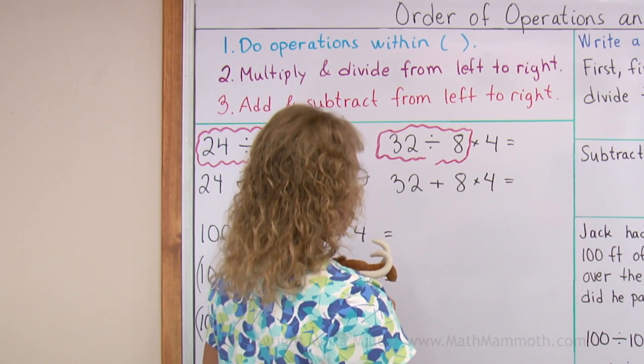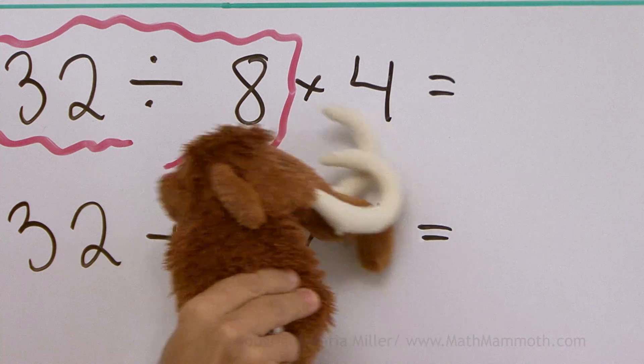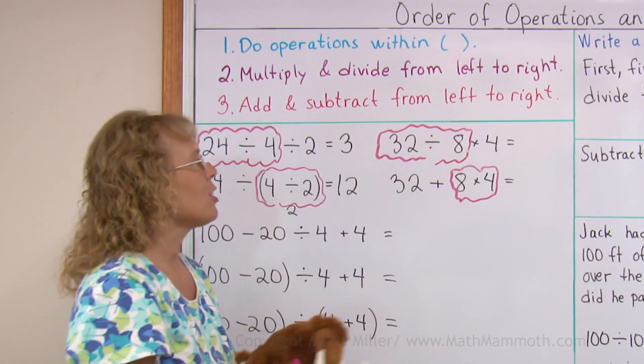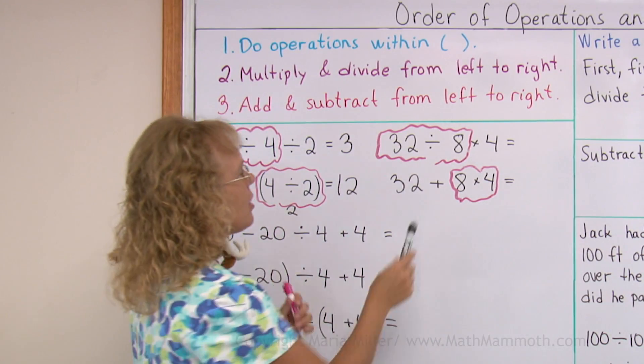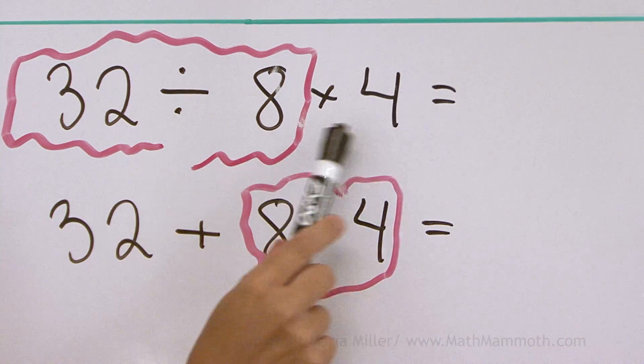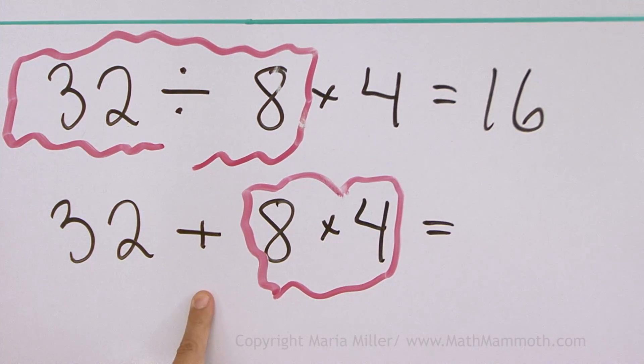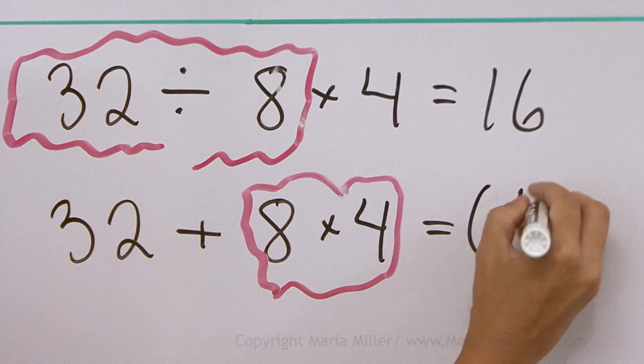How about in the next one, Mathi? You do that one too. Yes. In the next one, multiplication is done first. So here, this is 4 times 4, 16. And this is 32 plus 32, 64.